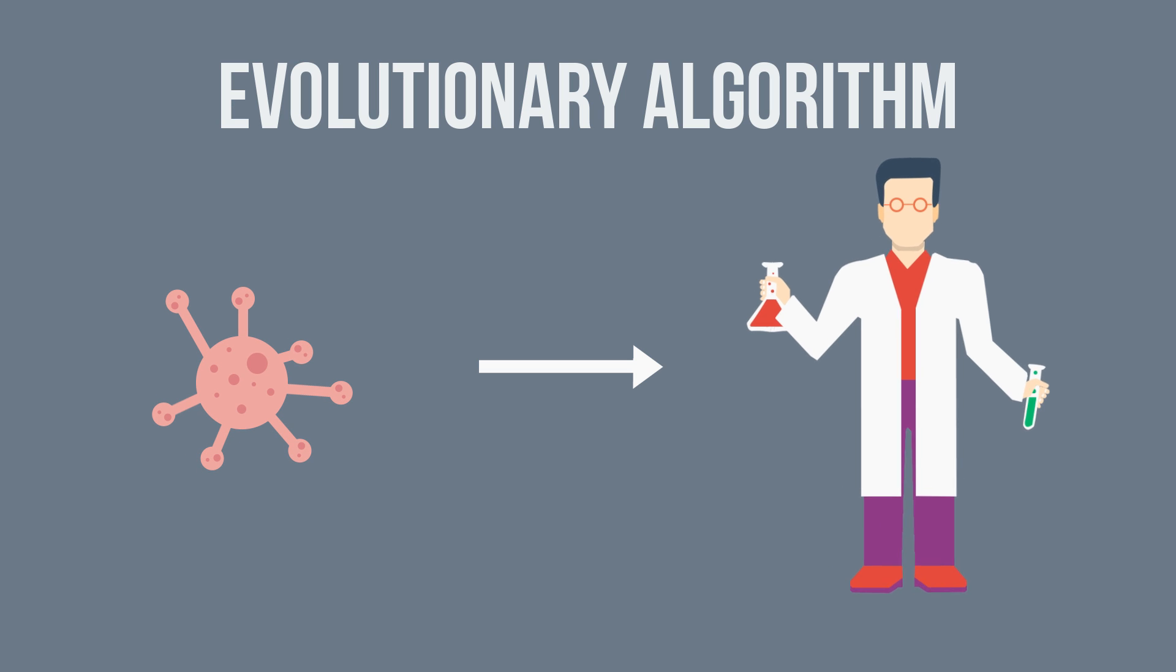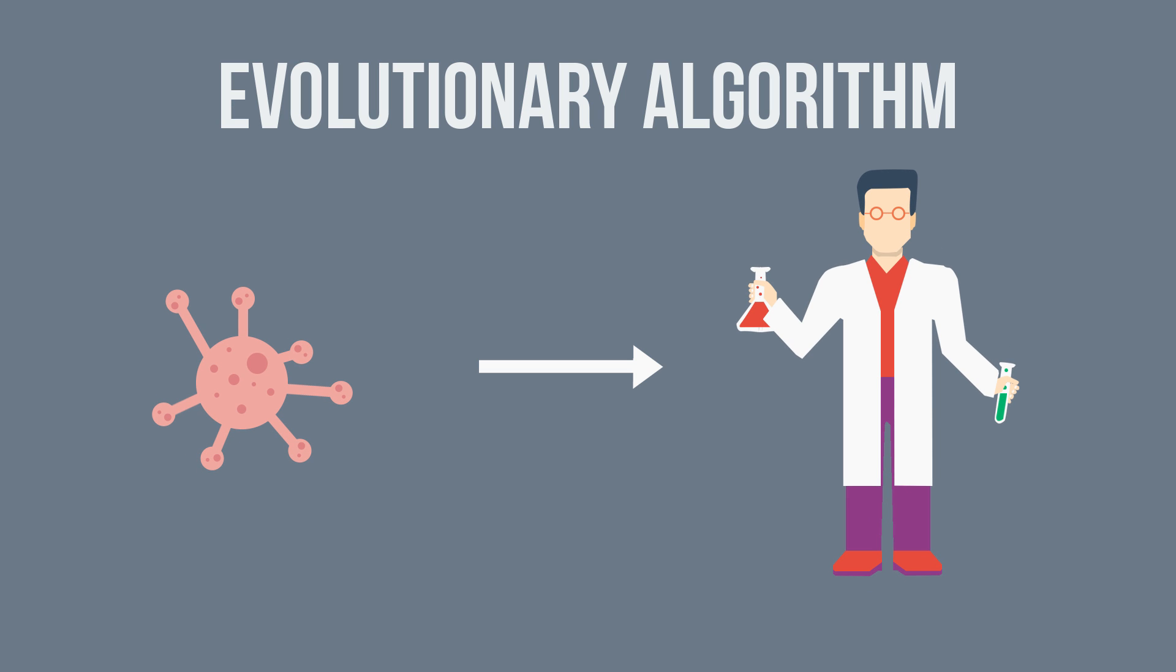This algorithm is based on evolution in nature and is a fast way to find a good solution, without checking every possibility. To show how this algorithm works, let's say we want our computer to generate a creature which can walk the furthest.